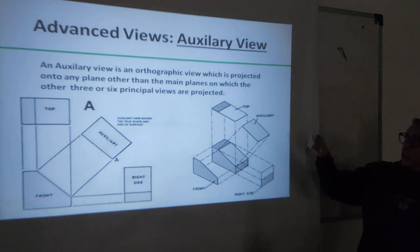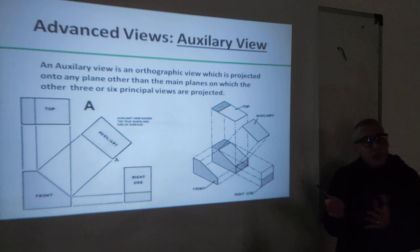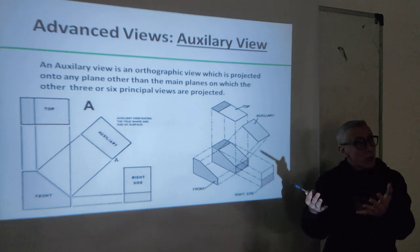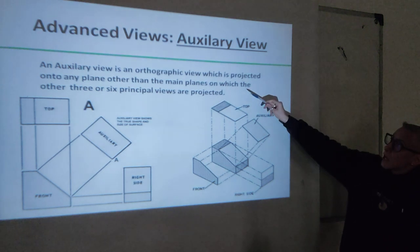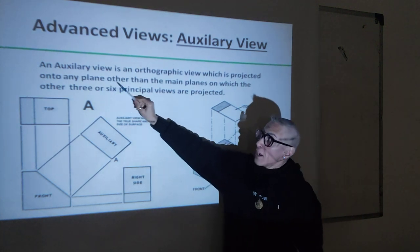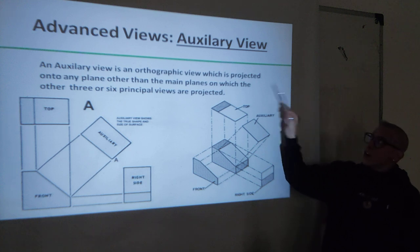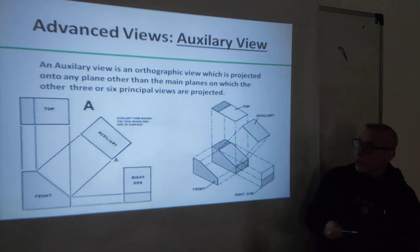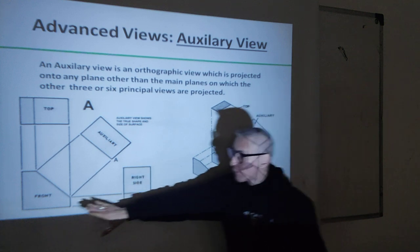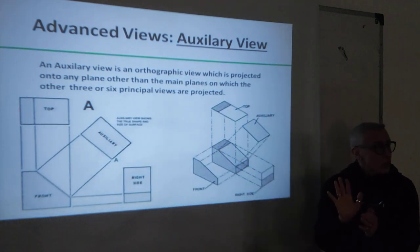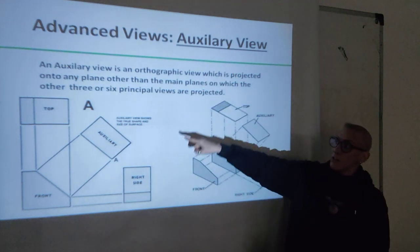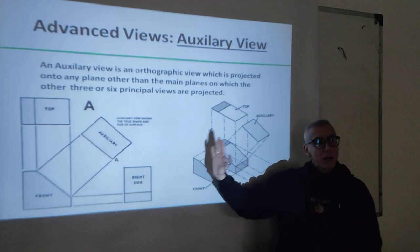An auxiliary view is an orthographic view - it's considered part of the orthographic drawing where you put the front, the side, the top. But sometimes it's present, sometimes not. It's an orthographic view which is projected onto any plane other than the main planes on which the other three or six views are projected. There are main planes: the front, the top, the side view, bottom view, other side view, back view - three views or six views. These are the major planes.